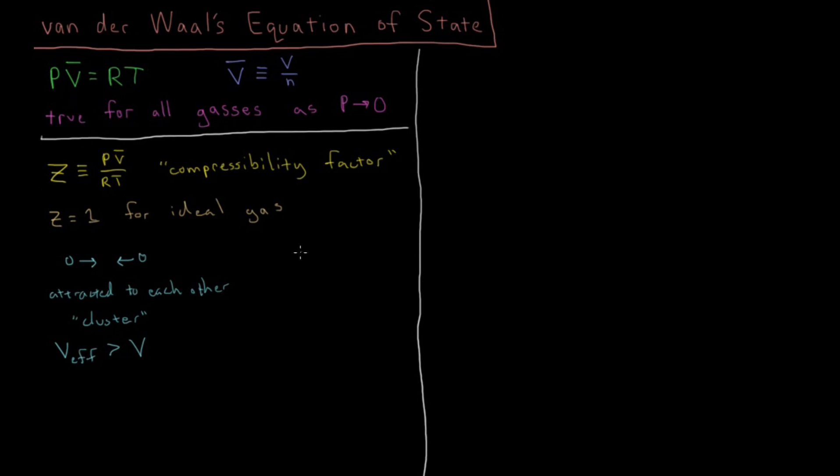And then the other case is at very short range. We know that these molecules should repel each other, so these molecules do actually take up some amount of physical space, after which they will start repelling each other if you try to jam them in closer than that. So in this case they take up some physical volume, so our effective volume that is left over is less than the volume which we would actually measure for our system.